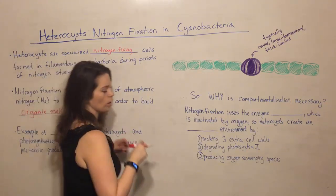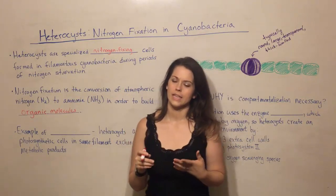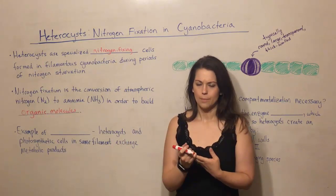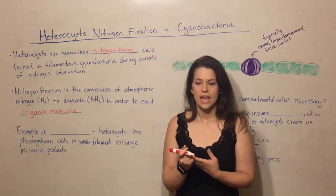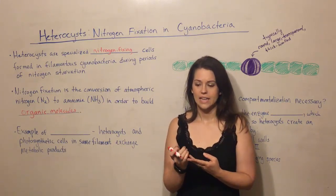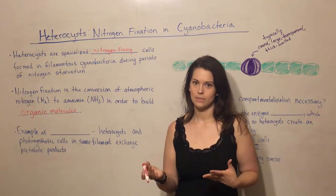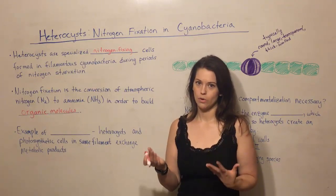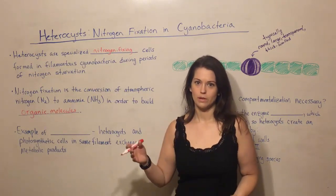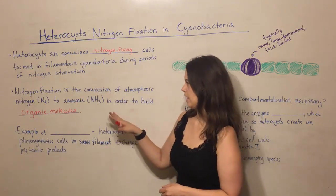By organic molecules, we're talking about things like DNA, RNA, and proteins. DNA and RNA are composed of nucleotides; proteins are made of amino acids. Nucleotides and amino acids both require nitrogen to make those essential building blocks.